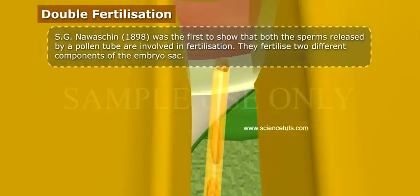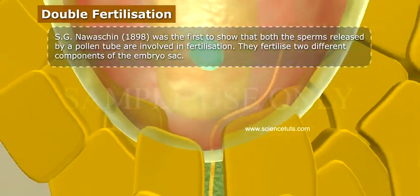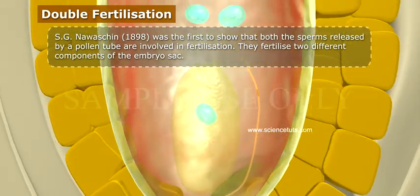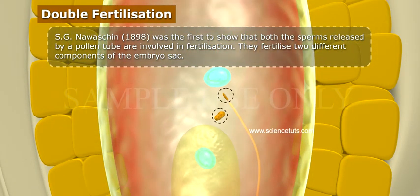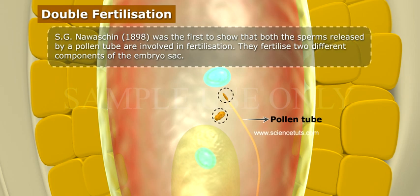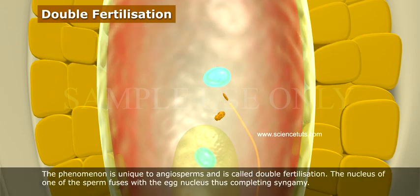Double fertilization: S.G. Nawaschin, in 1898, was the first to show that both the sperms released by a pollen tube are involved in fertilization. They fertilize two different components of the embryo sac. This phenomenon is unique to angiosperms and is called double fertilization.